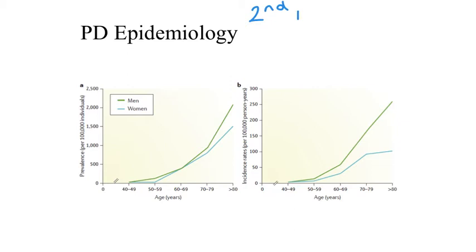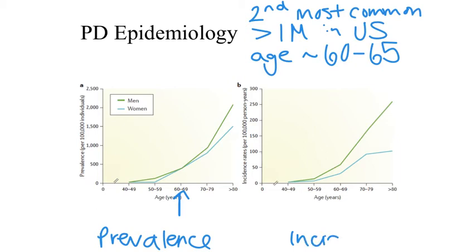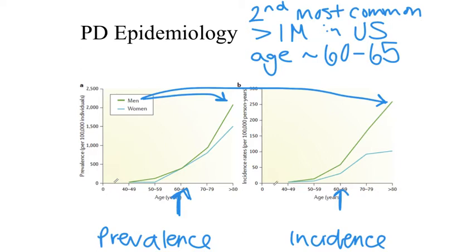Parkinson's disease is the second most common neurodegenerative disease after Alzheimer's, and it currently affects over 1 million people in the United States. The average age of diagnosis for Parkinson's disease is somewhere between the age of 60 and 65. As evidenced by these figures, which display prevalence on the left and incidence on the right, you can see the sharp increase in the number of cases after the 60 to 69 age group. In addition, the risk of Parkinson's disease is slightly higher in men.